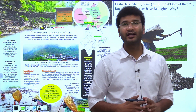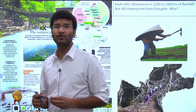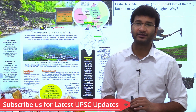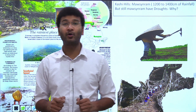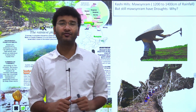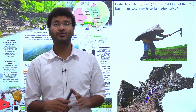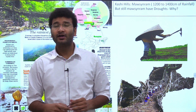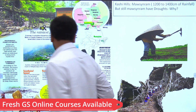Today our first article is regarding Mawsynram and Cherrapunji, where the annual average rainfall is somewhere around 1400 cm. But in spite of this amount of rainfall, there are news articles talking about droughts in this region. Why do we have droughts in spite of such high rainfall? For that, we have to look into different types of droughts and how they are defined.